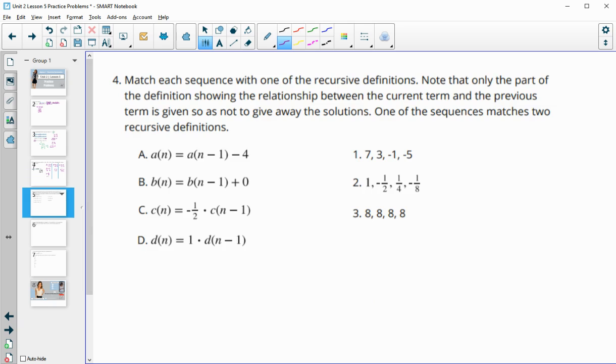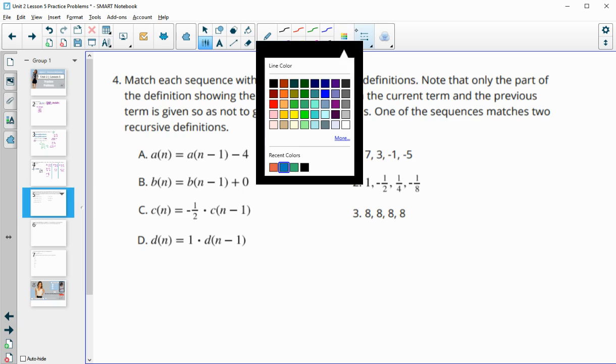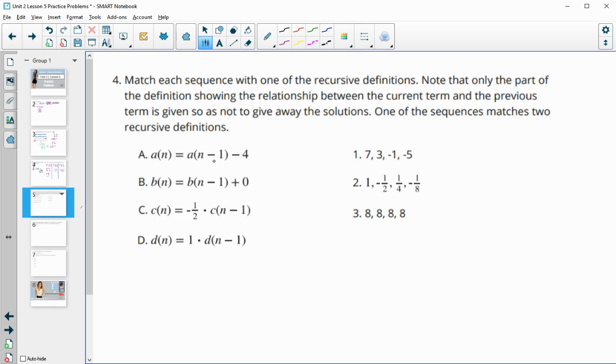Number 4, match each sequence with one of the recursive definitions. Note that only the part of the definition showing the relationship between the terms is given. So they're not telling you the starting term. But let's look at what's going to be happening in these. So this is saying the previous term minus 4. So your rule is going to be that you're subtracting 4 from each term here.